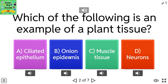Which of the following is an example of a plant tissue? A: ciliated epithelium. B: onion epidermis. C: muscle tissue. D: neurons.